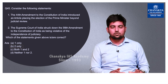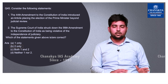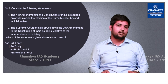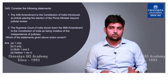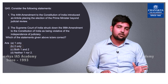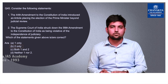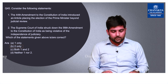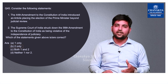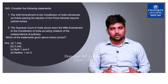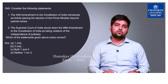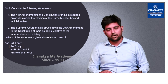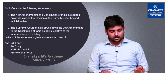Question number 45 pertains to significant constitutional amendments. Statement 1 — that the 44th Amendment introduced an article placing the election of the Prime Minister under judicial review — is wrong; this happened in the 38th Amendment. The 44th Amendment was known as the 'savior of the constitution.' Statement 2 — that the Supreme Court struck down the 99th Amendment as violative of judicial independence — is correct, as in 2015 the Supreme Court struck down the National Judicial Appointments Commission. The correct option is B — 2 only.